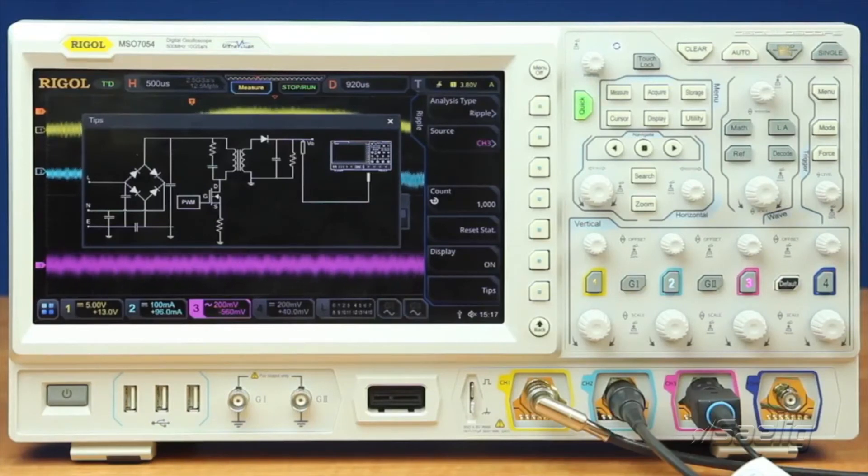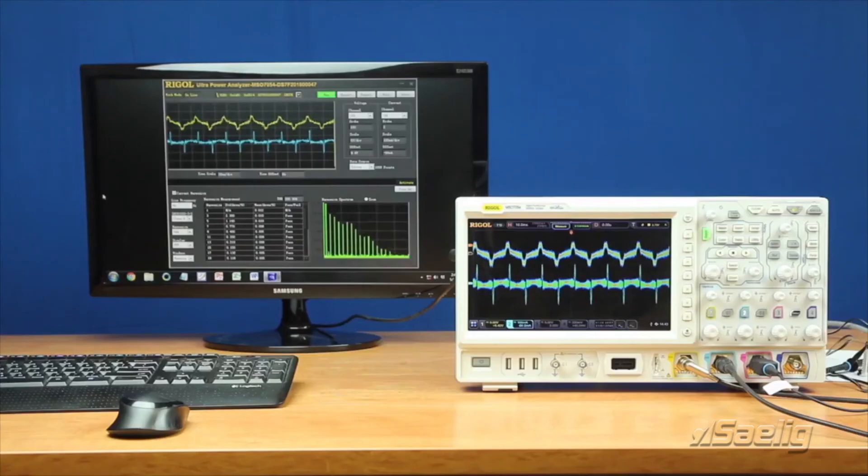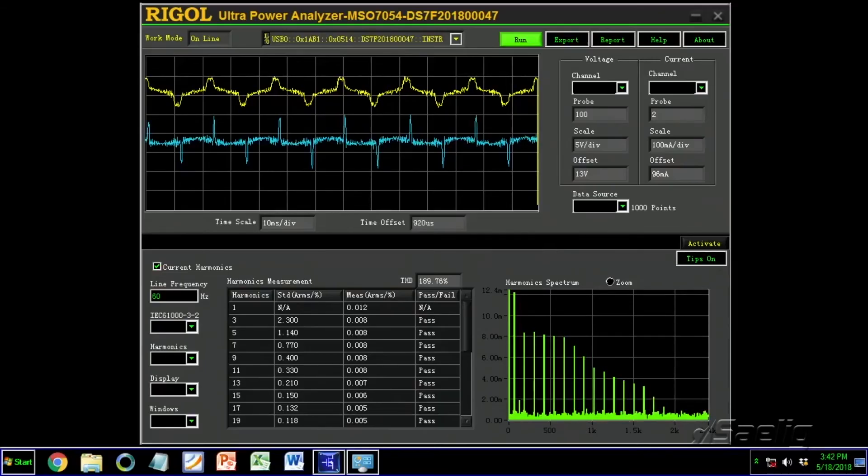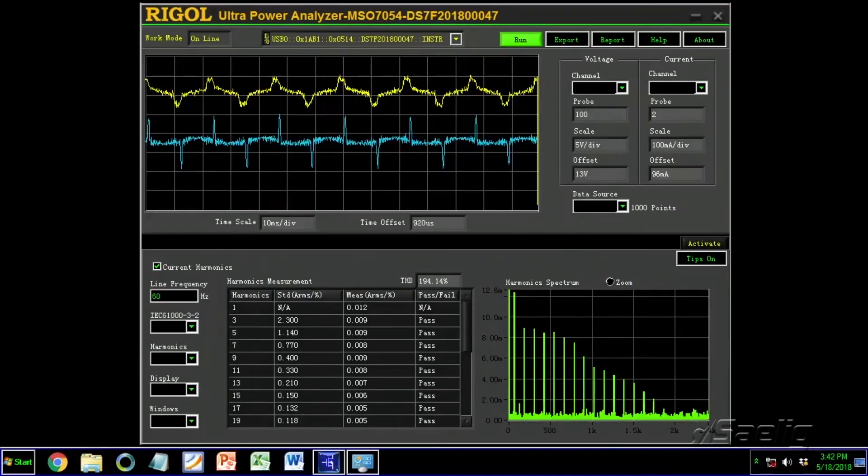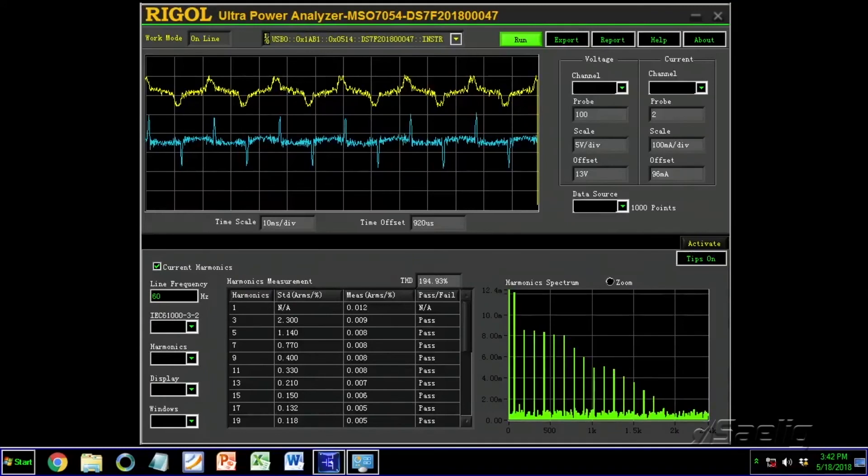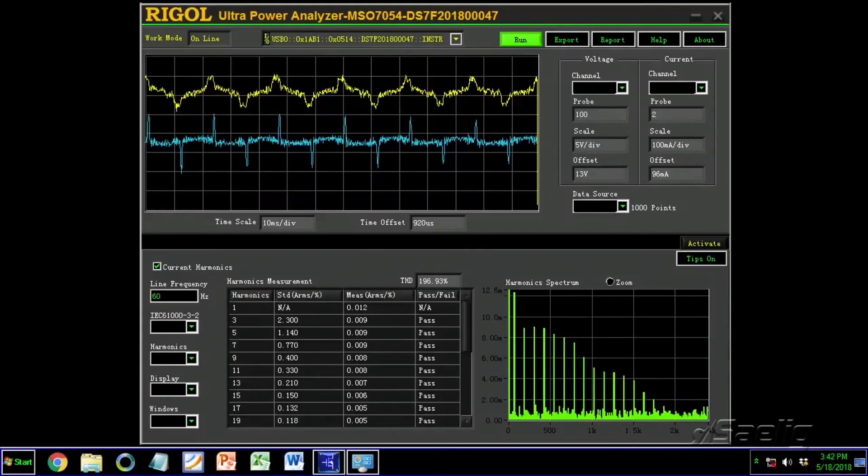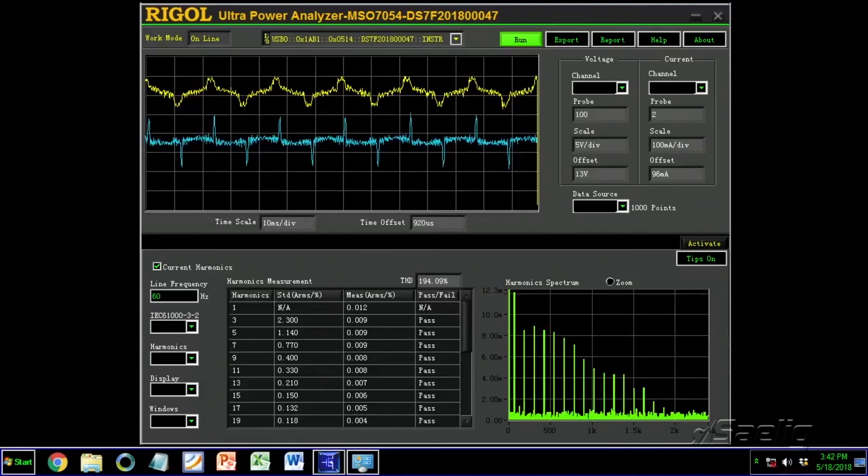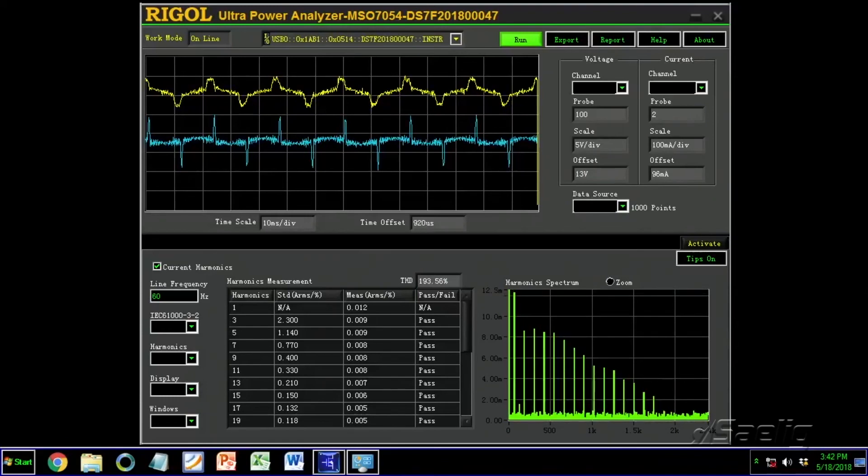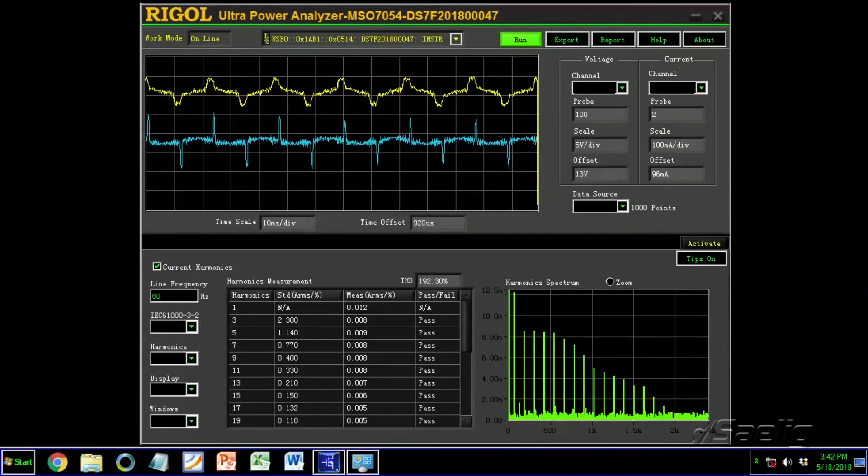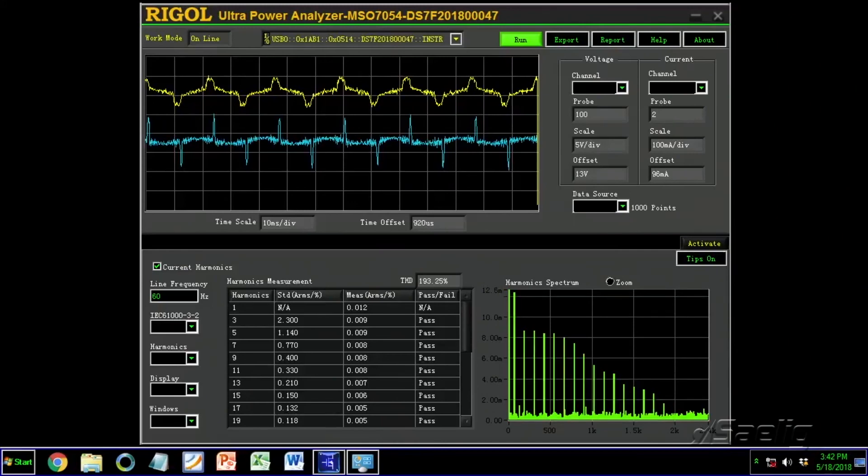Now let's look at the ultra power analyzer software to complete your advanced power measurements. For the third component of your power analysis test, you can use the 7000 series with our ultra power analyzer software to make measurements like this. Here the software is calculating the current harmonics within your signal by using both the voltage and the current measurements together. You can also do things like safe operating area and other measurements within the ultra power analyzer software to give you a complete look at all your power analysis needs.